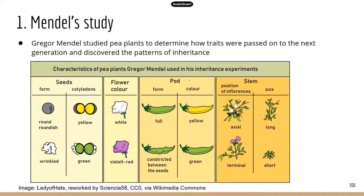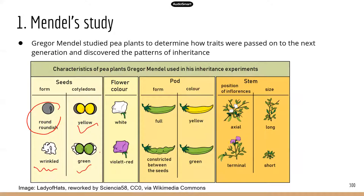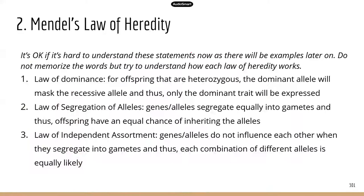Now let's do a quick overview on Mendel's study. Mendel was a monk who had a lot of free time to study biology, and he was really passionate about it. He spent years observing peas to study the patterns of inheritance, because he noticed that individual pea plants had different traits — some seeds are round and smooth, some are wrinkled, some are yellow and others are green. He was trying to figure out what determines why plants had certain traits but not others. Eventually he discovered the patterns of inheritance, and he's considered the father of genetics.